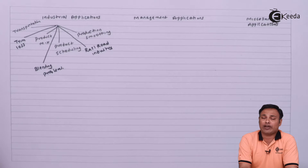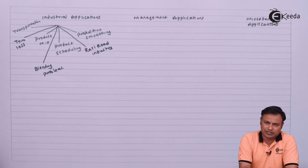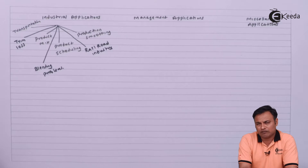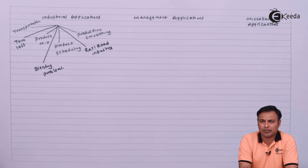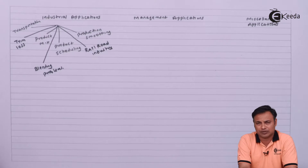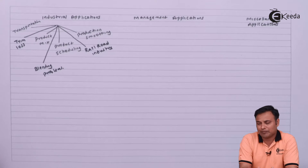Where there are more than two variables x and y, we can also use something called the simplex method. Although that method is not in our syllabus, one must always know what the simplex method is. The name itself suggests it is simple, but on the contrary it is a very complex method. Then we have some management applications.